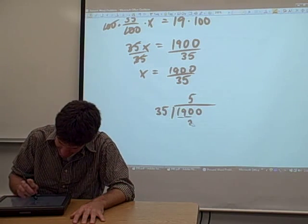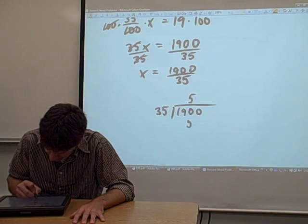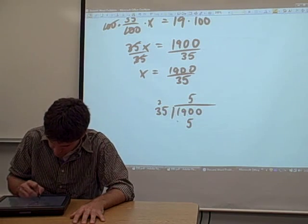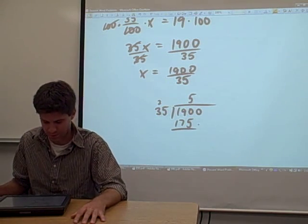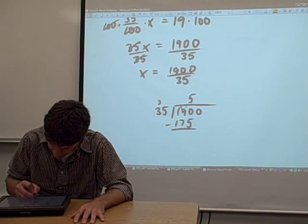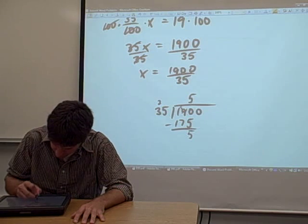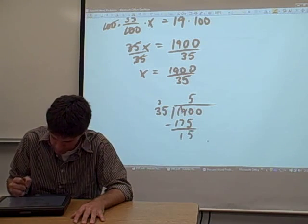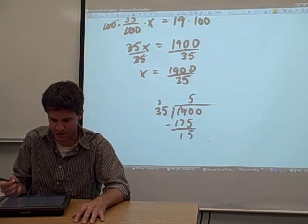5 times 5 is 25. Carry the 2, that's going to give us 175. When we subtract, yep, 15. So 5 was the right answer.